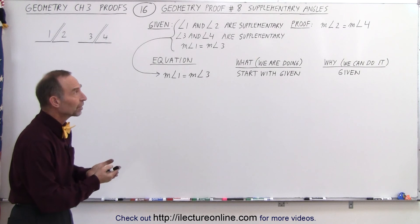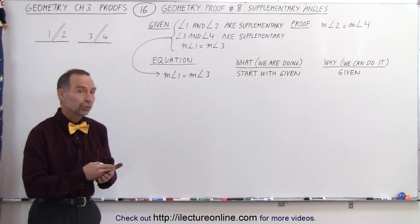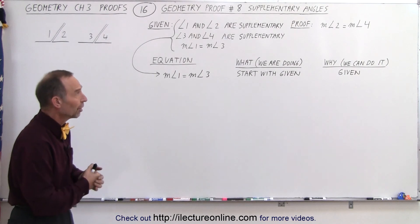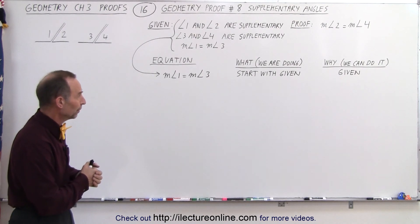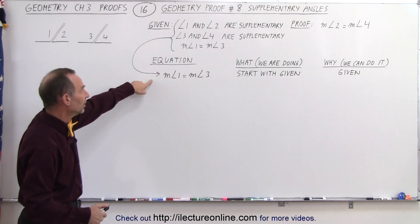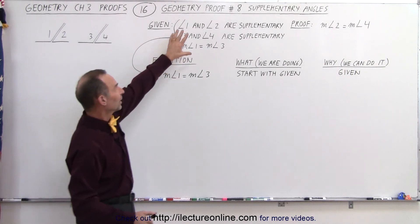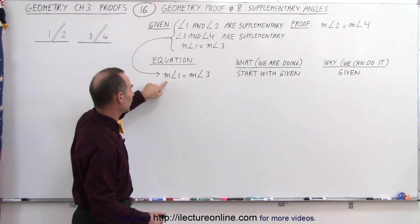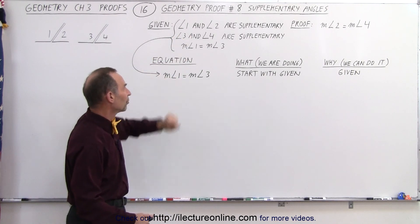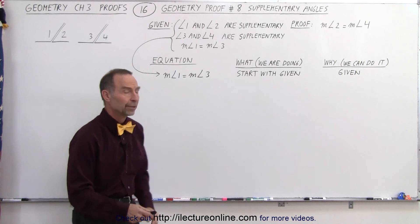We're trying to prove that the measure of angle 2 must therefore equal the measure of angle 4. So we start with what is given — specifically that the measure of angle 1 equals the measure of angle 3.